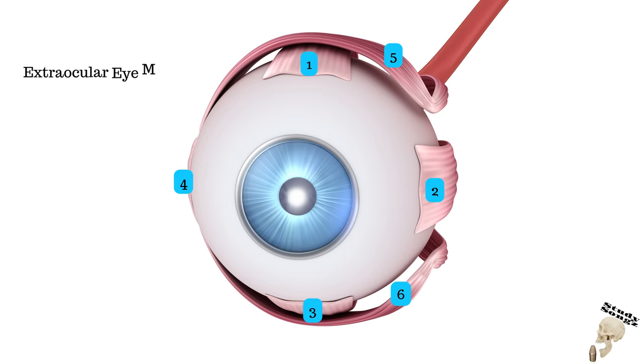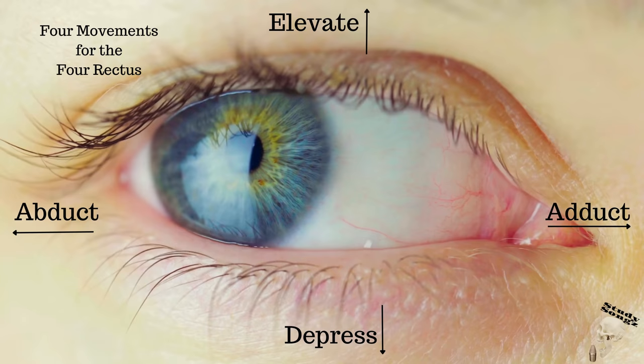Ocular eye muscles make eyes roll — abduct, adduct, elements of press. Four movements for the four rectus, two torsions for the two obliques. Six muscles for the eyes moving.